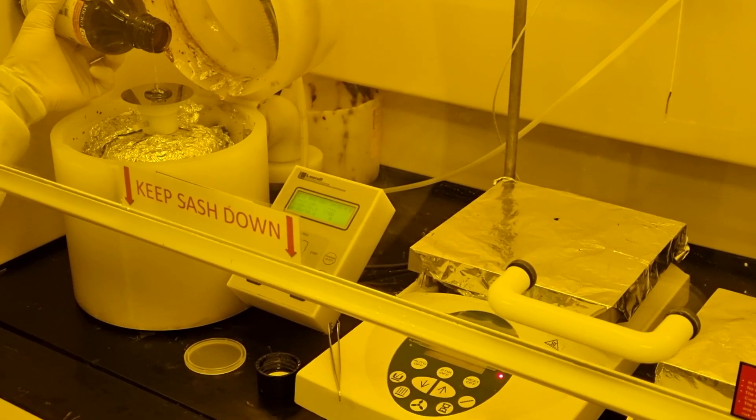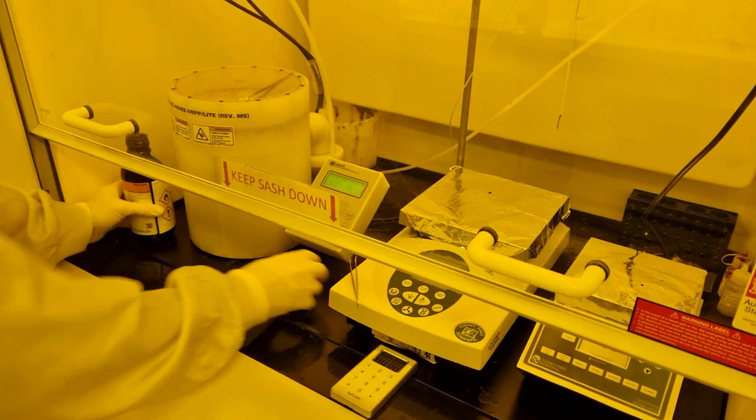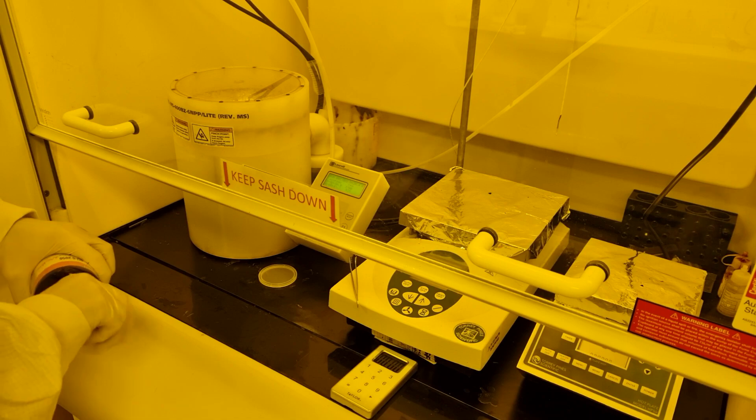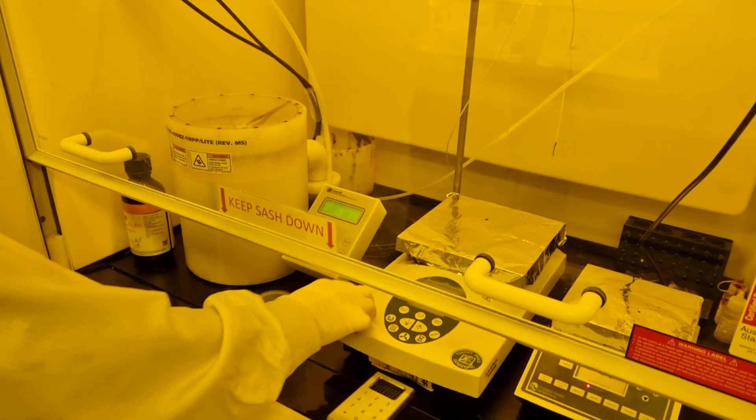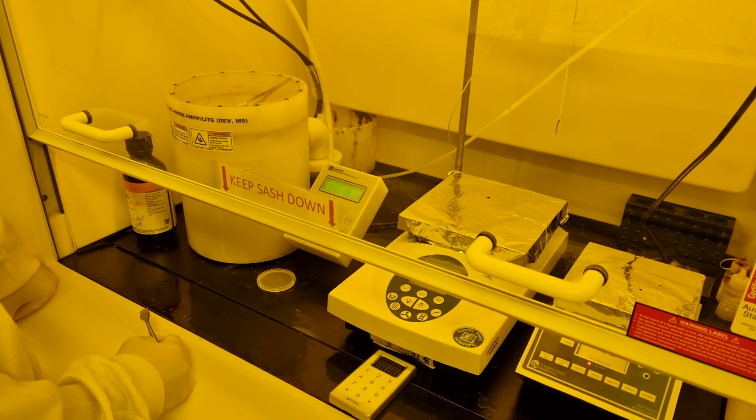It takes some practice and skill to avoid getting the sticky photoresist on the threads of the bottle. The spin speed and time will come from the photoresist datasheet. SU8 resist should be spun with slow acceleration to help the puddle spread. The last digits of the resist type usually indicate how thick the film should be when spun at 30 seconds and 4000 rpms.